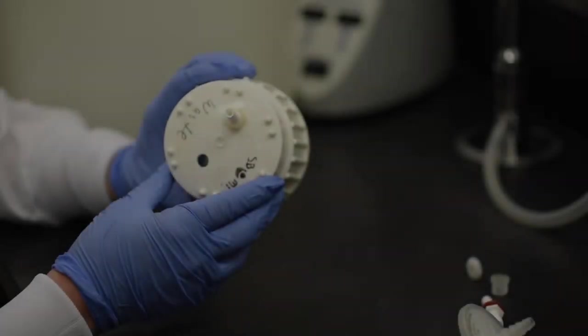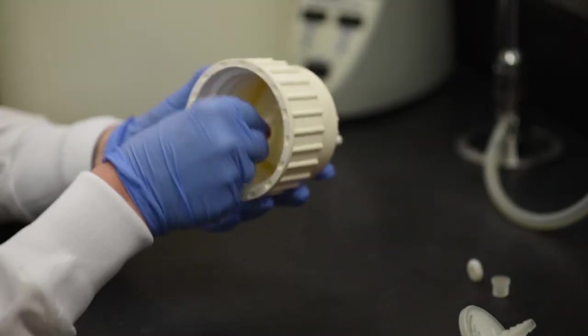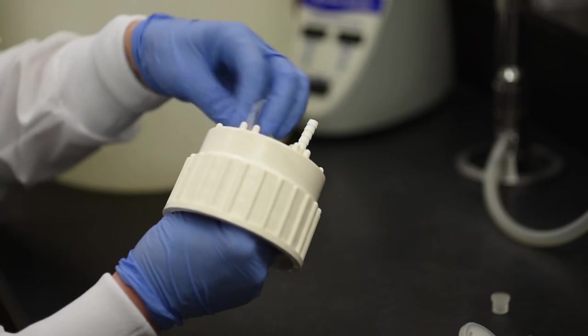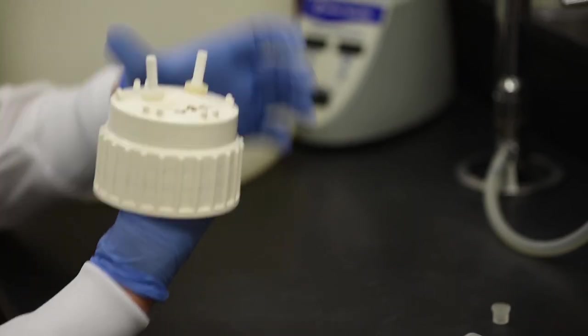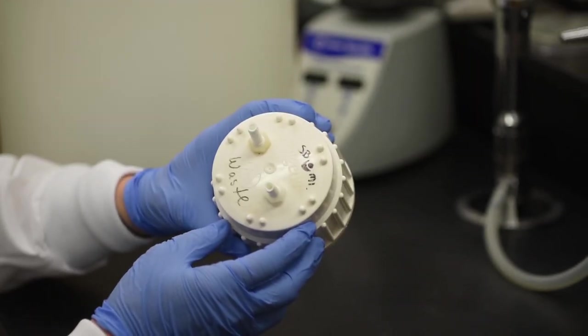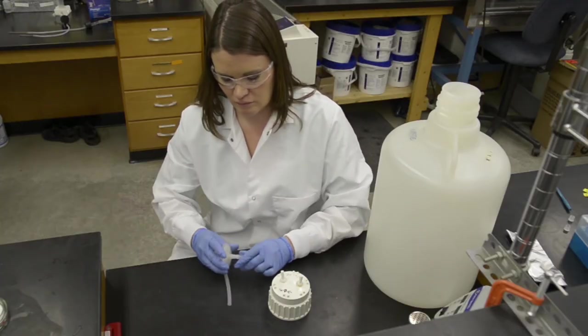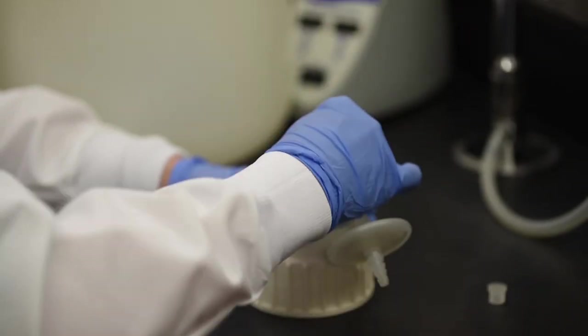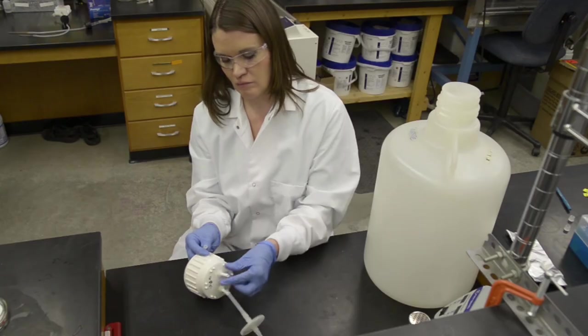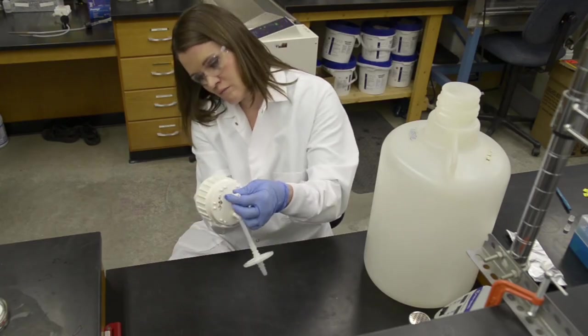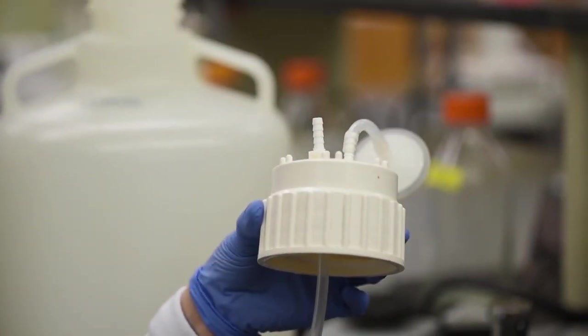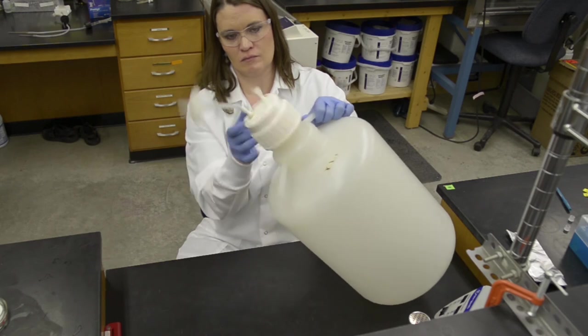Drill two holes in a 20 liter carboy lid. Install a 1 quarter inch barbed bulkhead fitting into each hole so that the nut is on top of the lid. Add a short length of size 18 silicone tubing and a bacterial air vent to the top of one fitting. Add a short length of size 18 silicone tubing to the bottom of the other fitting so that the tubing extends a few inches into the top of the carboy.